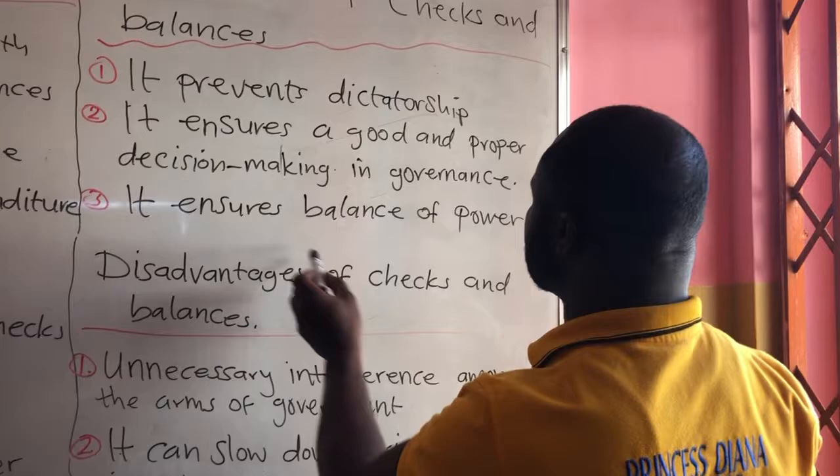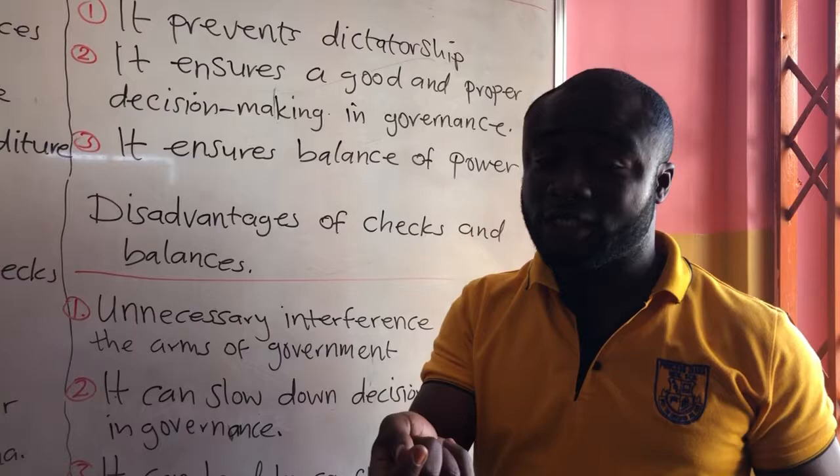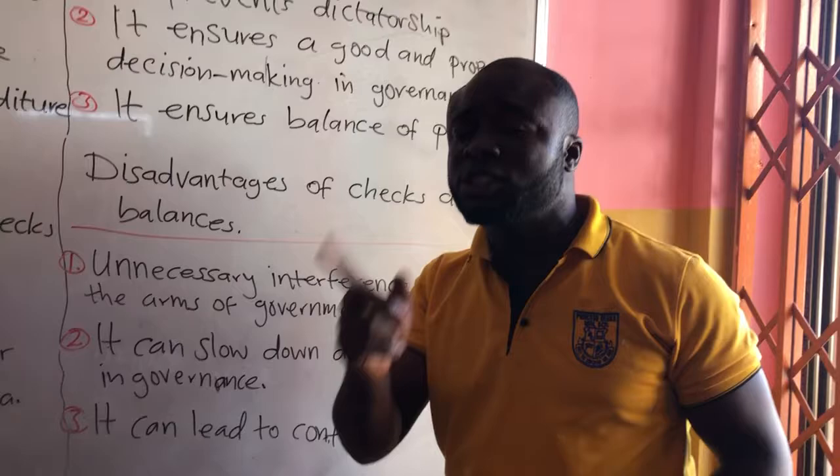It also ensures balance of power. The executive is always checking the legislature, and the legislature is always checking the executive. Similarly, the executive in a way is checking the judiciary, and the judiciary is also checking the executive. So there is balance of power among the arms of government.